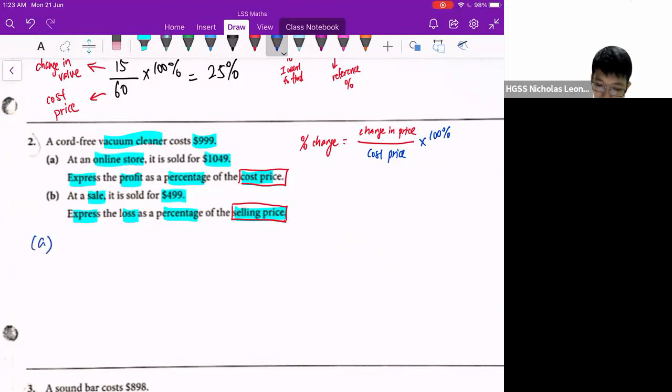So for part A, let's work it out. So the profit will be taking the selling price, $1049 minus $999. This gives me $50. And now I want to find what is the percentage profit. So I take $50 over the cost price, which is $999, times 100%. And I just need to calculate it into my calculator. This will give me 5.01%.